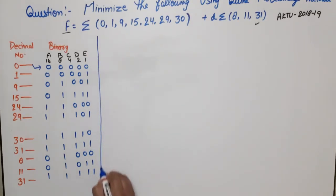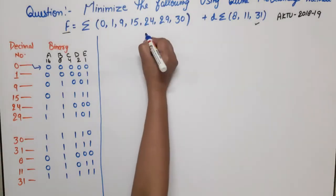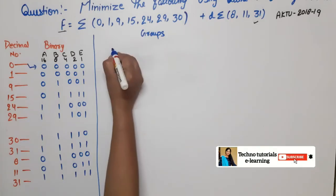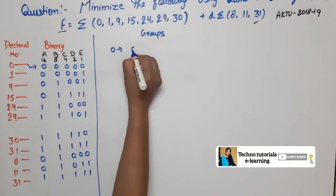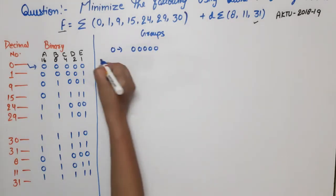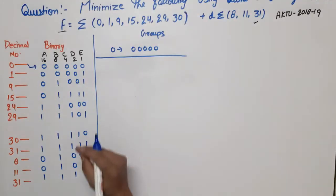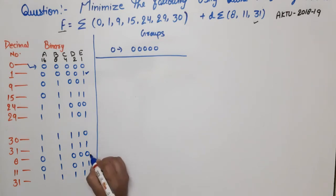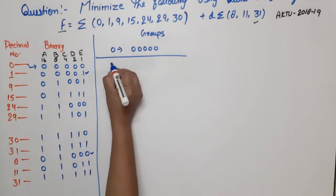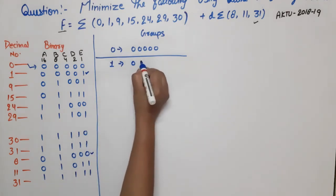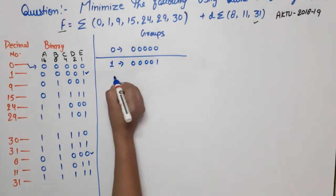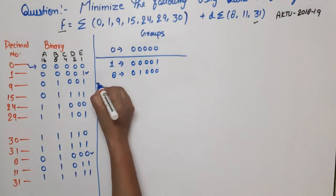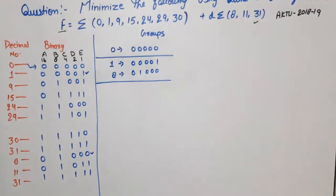Now we will do grouping. The groups are based on the number of 1s in the binary representation. Group 0 (zero 1s): minterm 0 → 00000. Group 1 (one 1): minterms 1 → 00001, and 8 → 01000. There is no minterm with exactly one 1 other than these two.